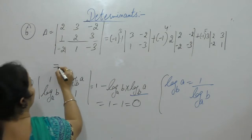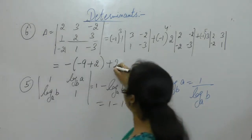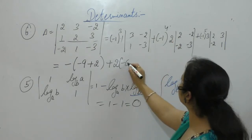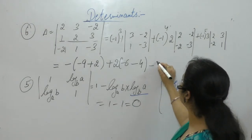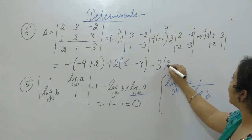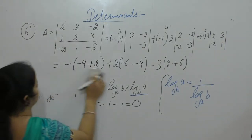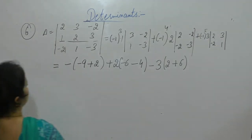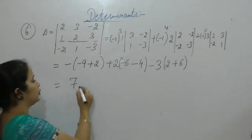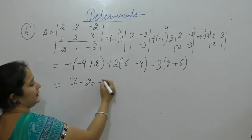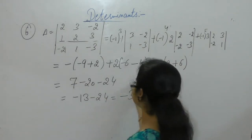Solving: minus 1 cubed = -1, times 1 times (-9 - (-2)) = -1×(−7). Then (-1)^4 = +1, times 2 times (-6 - 4) = 2×(-10) = -20. Then (-1)^5 = -1, times 3 times (2 + 6) = -1×3×8 = -24. Result: 6 + 4 = 10, into 2 = 20, then 6 plus 2 = 8, into 3 = 24. Final: minus 13 minus 24 minus 30 = -67... approximately -7.